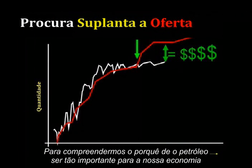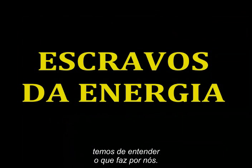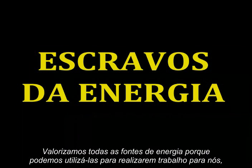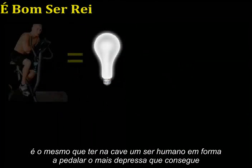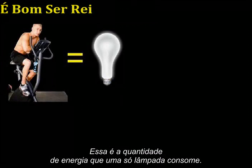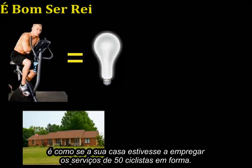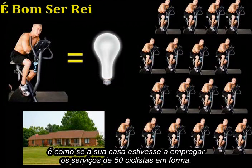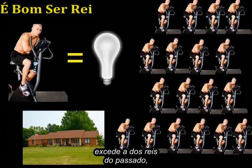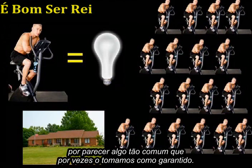In order to understand why oil is so important to our economy and our daily lives, we have to understand something about what it does for us. We value any source of energy because we can harness it to do work for us. For example, every time you turn on a 100-watt light bulb, it is the same as if you had a fit human being in the basement pedaling as hard as they could to keep that bulb lit. In the background, while you run water, take hot showers, and vacuum the floor, it is as if your house is employing the services of 50 such extremely fit bike riders. This slave count exceeds that of kings in times past — it can truly be said that we are all living like kings.